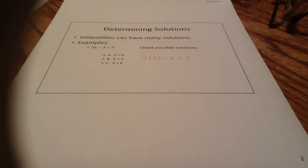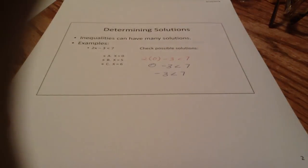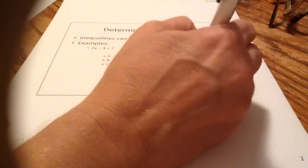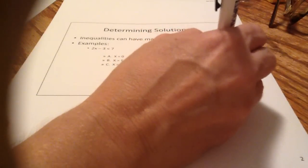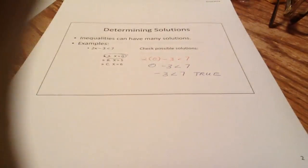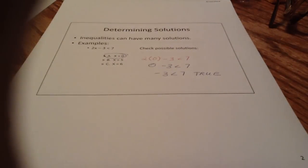We're going to start by plugging in 0 for x. So we have 2 times 0 minus 3 is less than 7. What we get is 0 minus 3 is less than 7. Negative 3 is less than 7, which is true. So if it makes the inequality true, then 0 is a solution to this inequality.